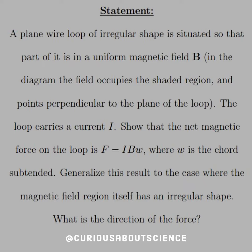Show that the net magnetic force on the loop is F equals IBW, where W is the chord subtended. And generalize this result to the case where the magnetic field region itself has an irregular shape. What is the direction of the force?